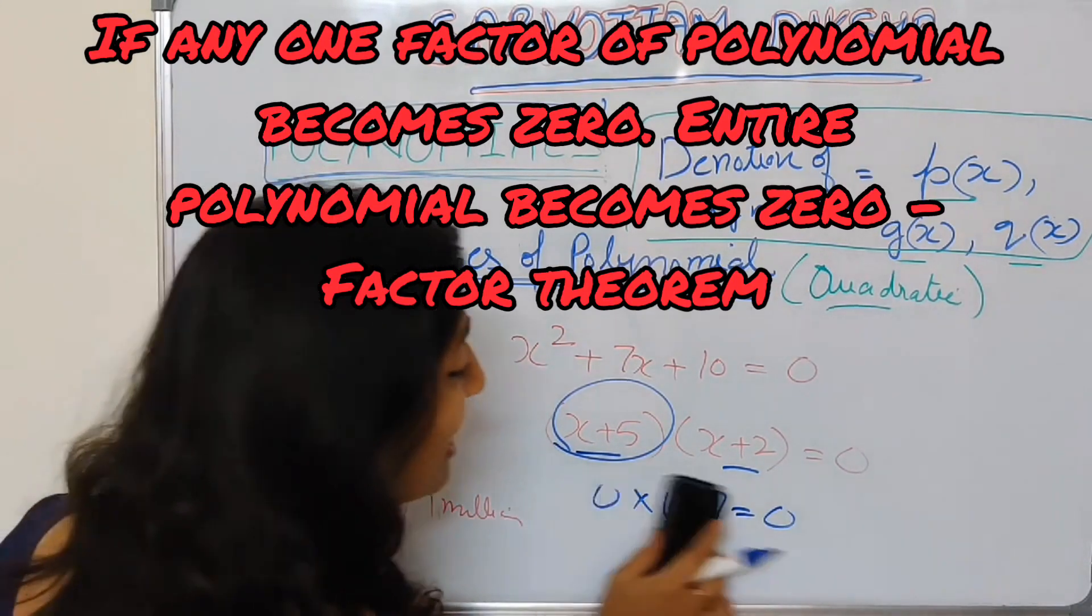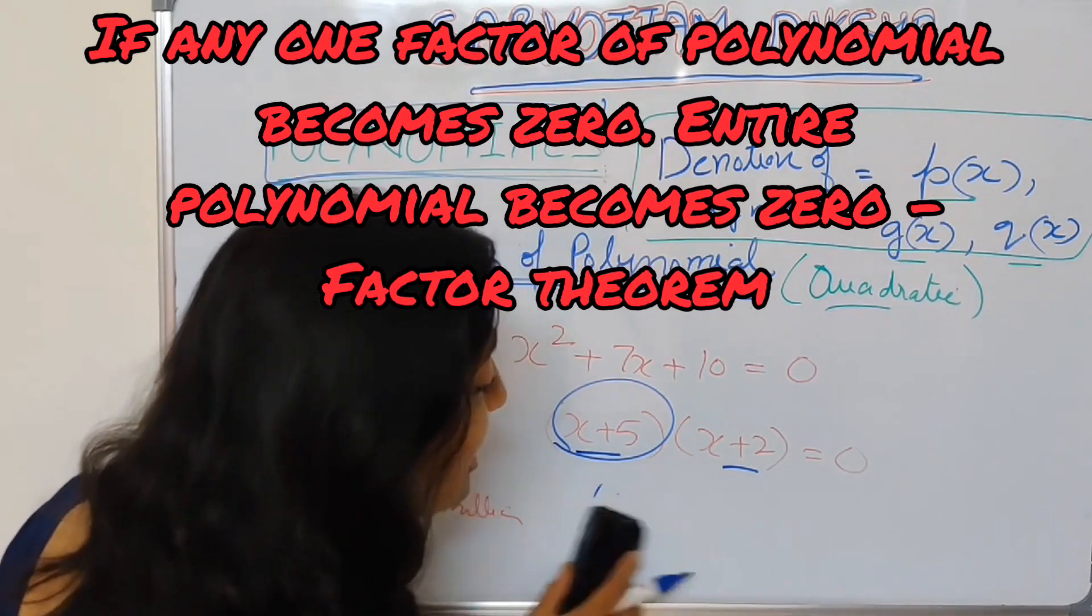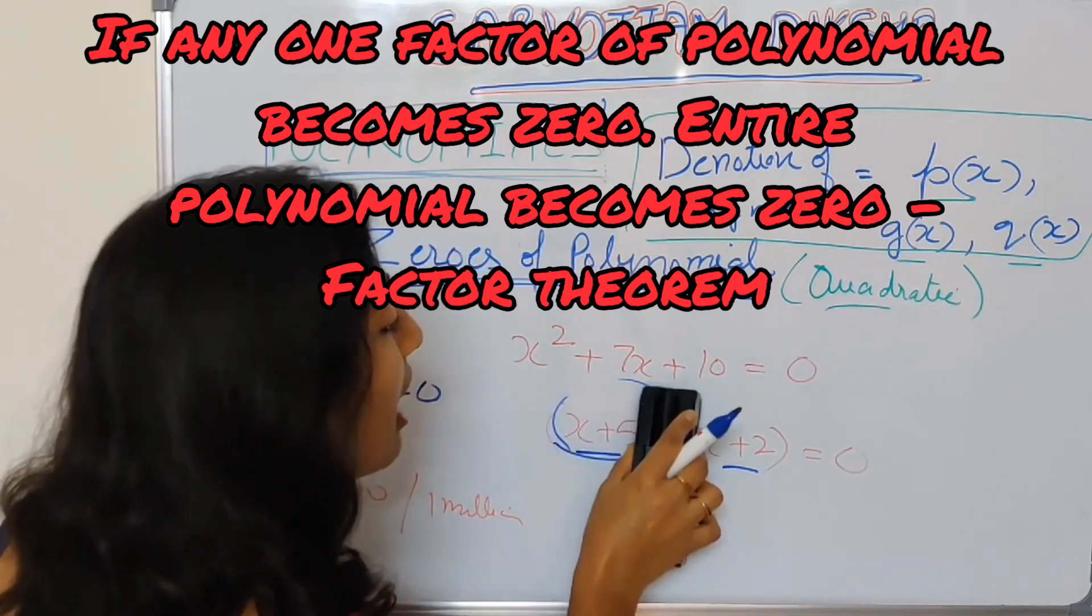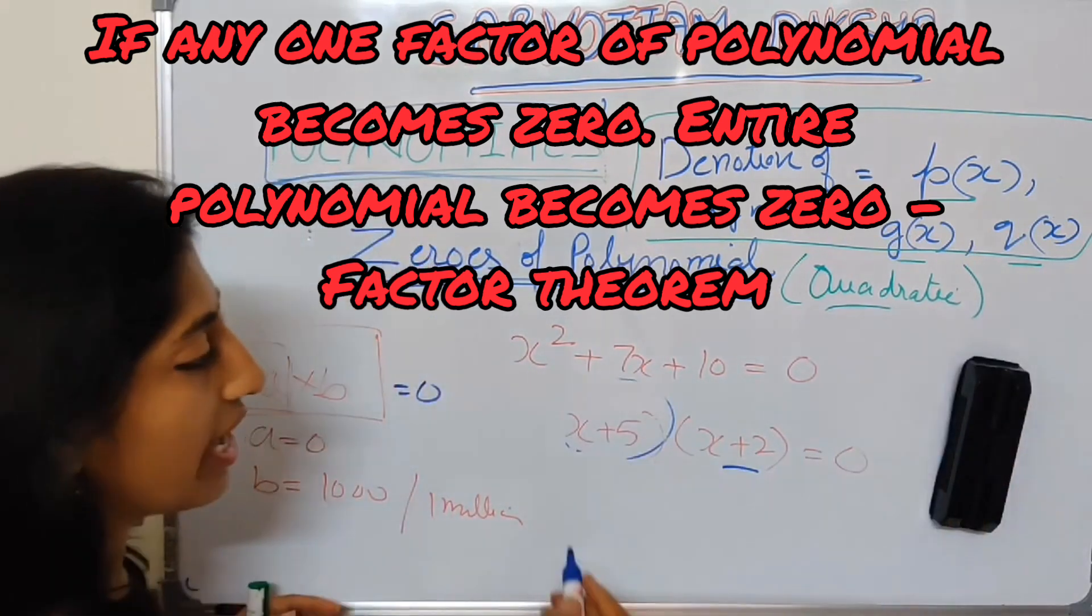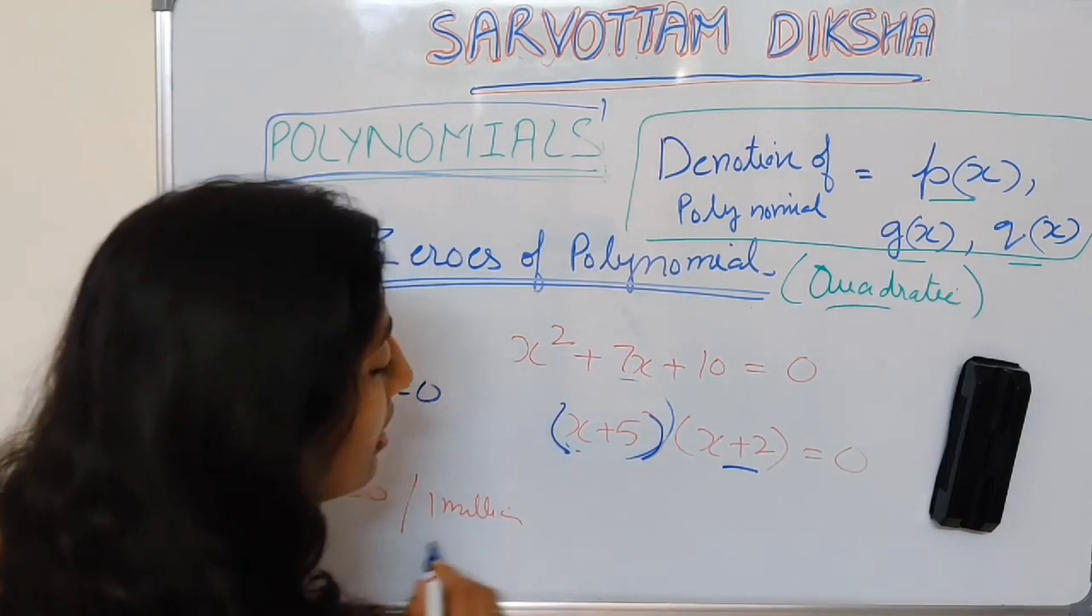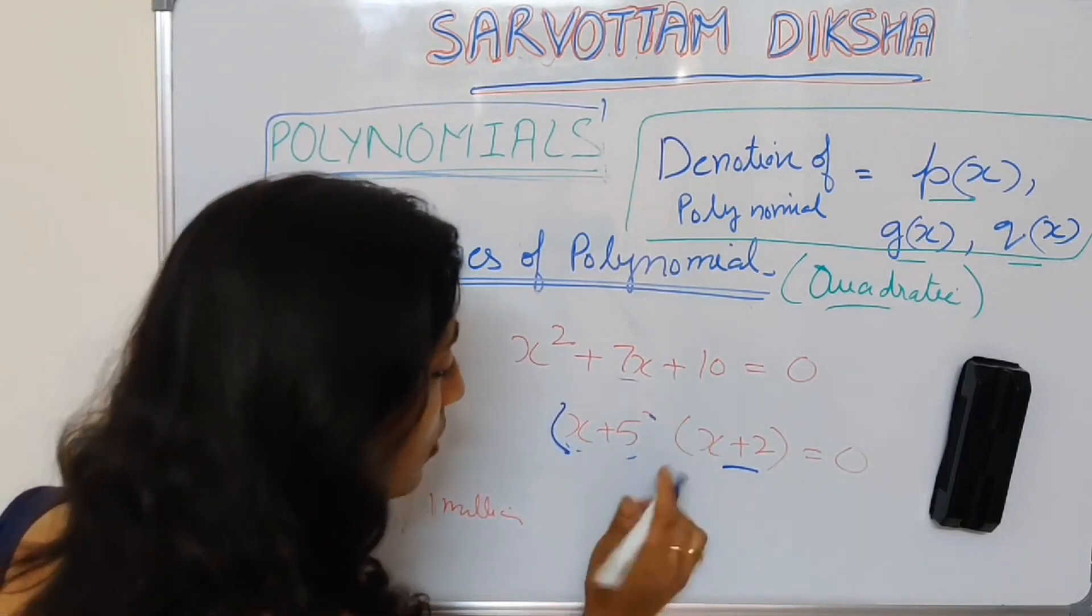So what I will do? I will see where these linear factors are becoming 0. For what value of x these linear factors are becoming 0.